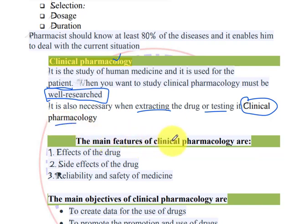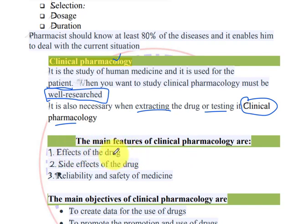The main theories of clinical pharmacology are: the effects of drugs, the side effects of drugs, and the ability and stability of medicine.